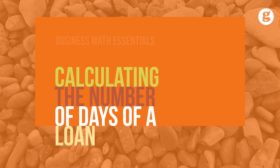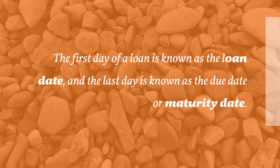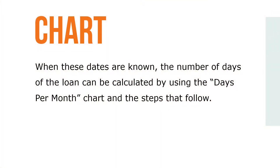Let's take a look at calculating the number of days of a loan. The first day of a loan is known as the loan date and the last day is known as the due date or maturity date. When these dates are known, the number of days of the loan can be calculated by using the days per month chart and the steps that follow.